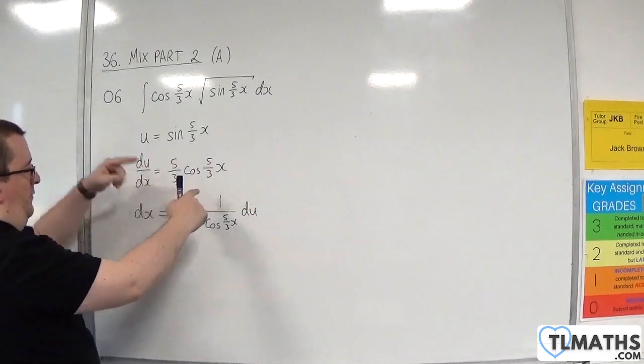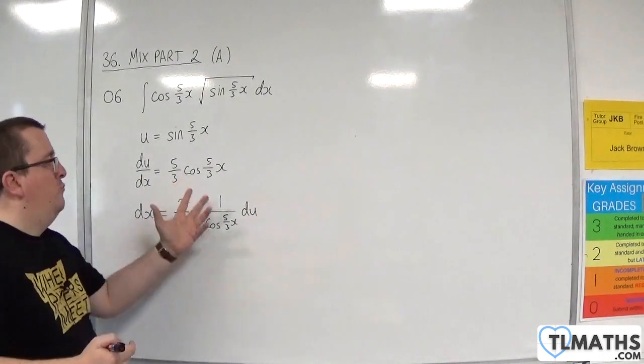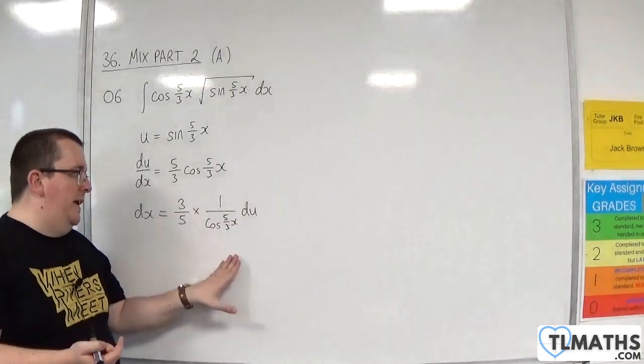So that will be 3 fifths times by 1 over cosine of 5 thirds x du. So I'm doing 1 over all of that. I wouldn't bother writing it as sec. I'll just leave it like that.